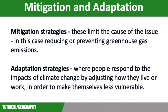Adaptation strategies are where people respond to the impacts of climate change by adjusting how they live or work in order to make themselves less vulnerable. These strategies are local as they respond to localised impacts. For example, building homes on stilts in areas where there has been an increase in sea level and therefore an increase in the risk of flooding, or by planting drought resistant seeds in areas of low rainfall.